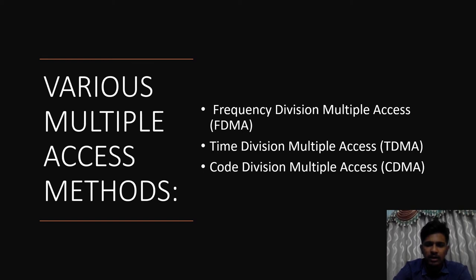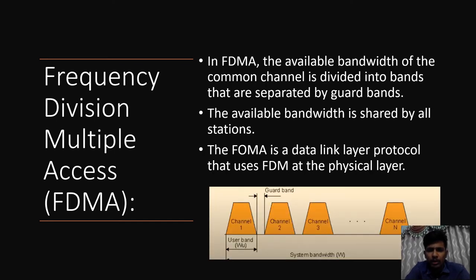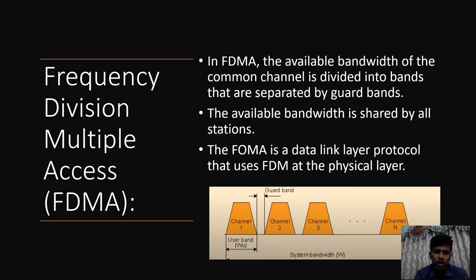Let's start by discussing frequency division multiple access. In FDMA, the available bandwidth of the common channel is divided into bands that are separated by guard bands. For example, if we have a common channel, the entire bandwidth is divided into bands. Suppose there are five stations — the entire bandwidth is divided into five user bands, and these user bands are assigned to each station so that all stations can transmit data simultaneously. To avoid overlapping where two bands are very near, each user band is separated by a guard band.